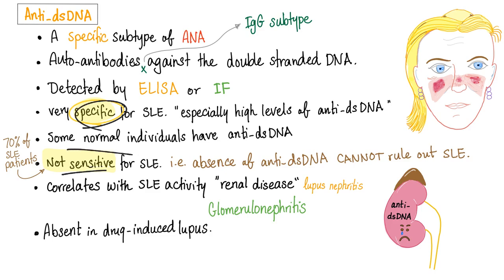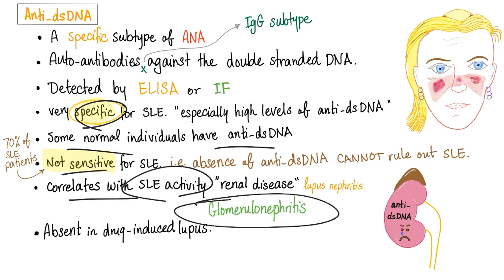Some normal individuals can have anti-double-stranded DNA, and they correlate with disease activity, especially glomerulonephritis as well as vasculitis.